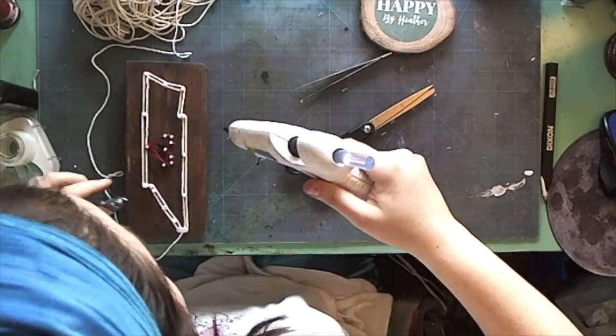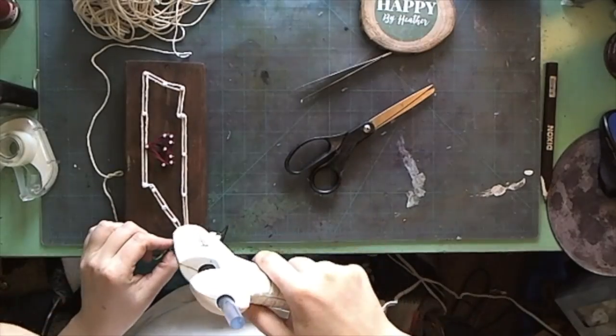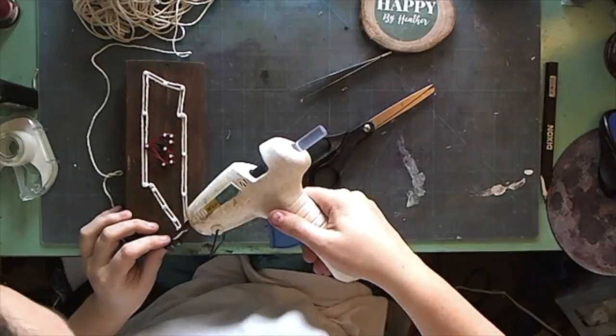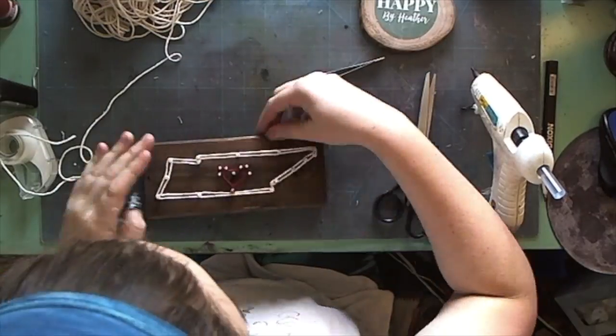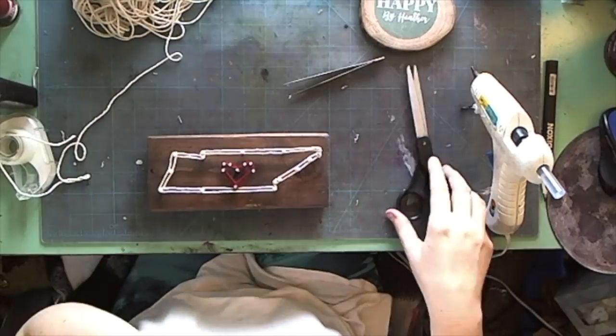All right, so as I wrap up—get it, wrap, wrap up—the finishing touches on my Tennessee outline, I'm just gonna put another dab of hot glue and cut it off. You can see it comes out pretty good like this.